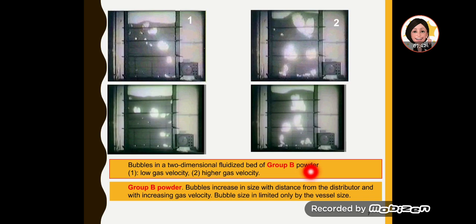When the velocity increases, the fluidization becomes aggressive and the bubbles are also bigger. The bubbles increase in size with distance from the distributor and with increasing gas velocity. From this point as it goes up, you notice it increases in size. Even for low velocity, it gets bigger when it gets away from the distributor.